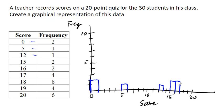And then 18, we're going to have a bar of height 8. And then at 19, we're going to have a score of 4.